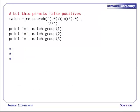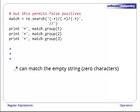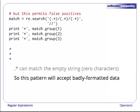Unfortunately, we have been over generous. Our pattern matches the string slash slash. Dot star can match the empty string because that is zero or more occurrences of the character. That means our pattern will accept badly formatted data which is likely to cause us headaches down the road.